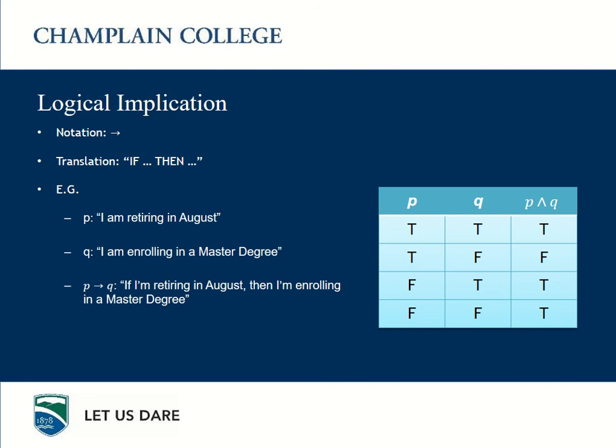Some people get confused about what happens if I do not retire in August. Well, if I do not retire in August, I didn't say anything about that. I didn't say what I would do in that case, so clearly I'm not lying — I can enroll or not enroll. I promised nothing about the situation where I do not retire. So if P is FALSE, no matter what Q is, the implication is still going to be TRUE.